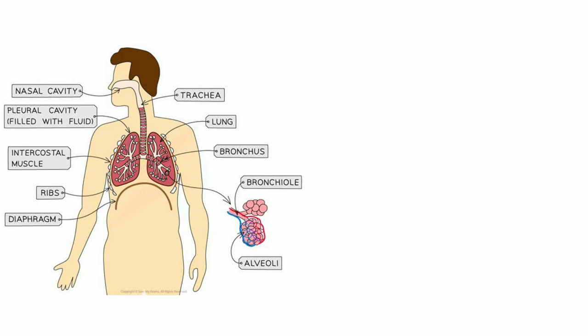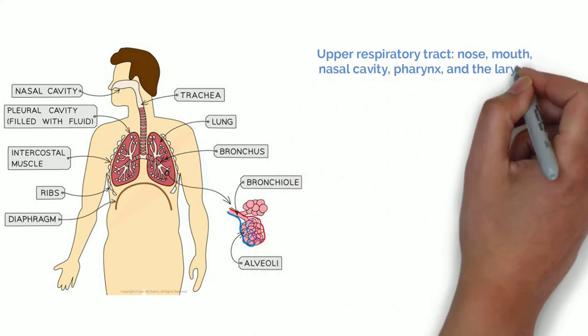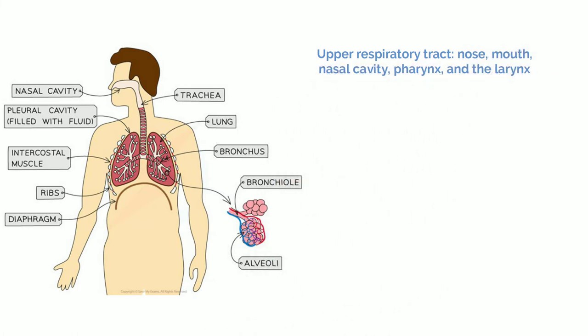The respiratory system consists of a variety of different organs and tissues. It is split into the structures of the upper and lower respiratory tracts. The upper respiratory tract consists of the nose, mouth, nasal cavity, pharynx, the wind or food pipe, and the larynx, which is the voice box. Each have specific functions in respiration.